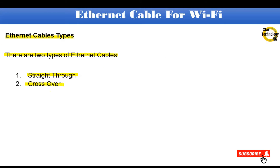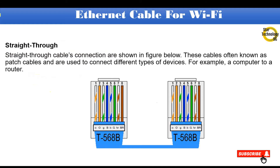Ethernet cable types. There are two types of Ethernet cables: straight-through and crossover. Straight-through cables, often known as patch cables, are used to connect different types of devices — for example, a computer to a router. In a straight-through cable, both sides of the connectors have the same arrangement of wires.